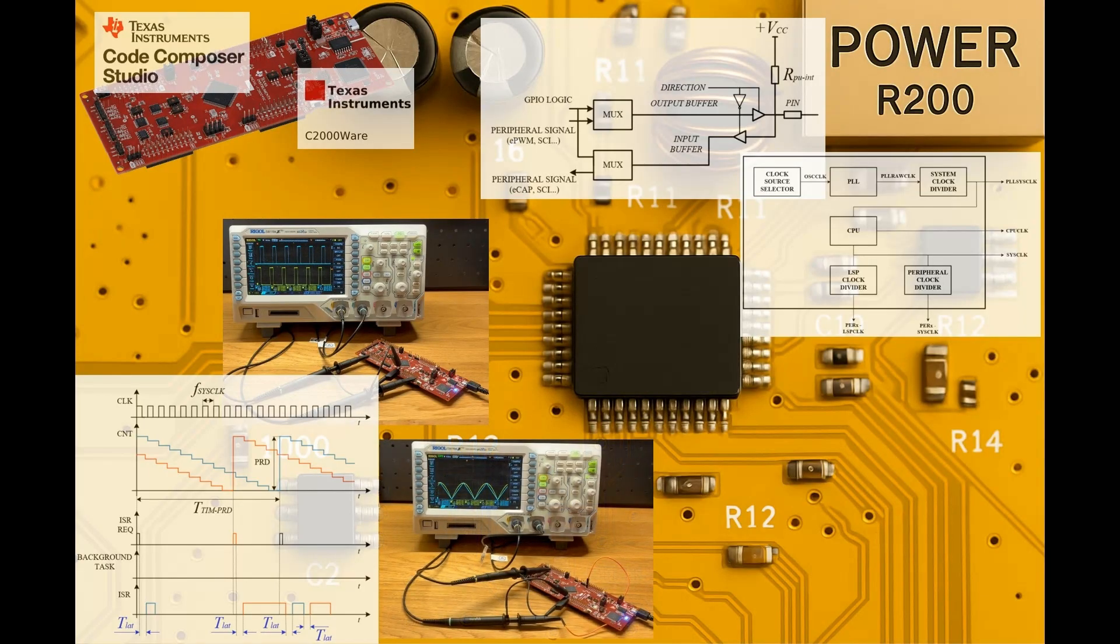Explore the analog side of the C2000 from generating signals with the DAC to capturing them through the ADC and comparators.